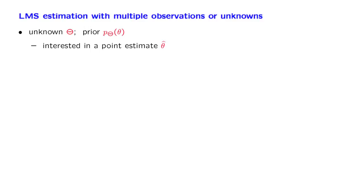Our discussion of least mean squares estimation so far was based on the case where we have a single unknown random variable and a single observation, and we are interested in a point estimate of this single unknown random variable.